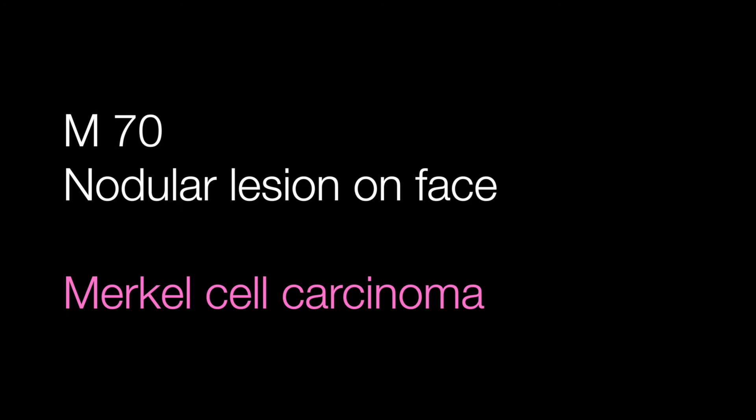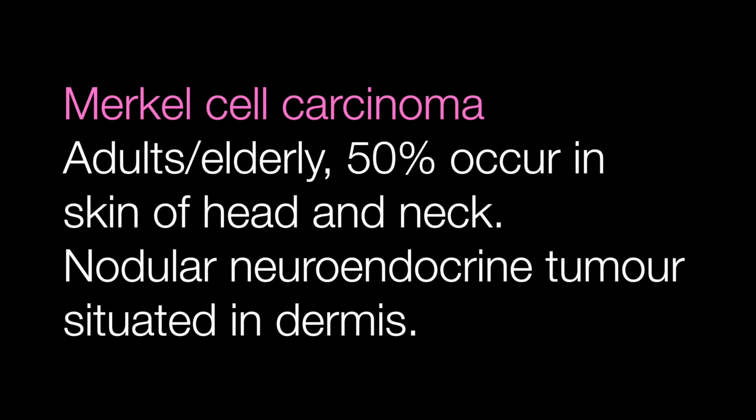The nodular lesion on the face of the 70-year-old man is a Merkel cell carcinoma. The majority of Merkel cell carcinomas arise in adults, especially the elderly, and 50% of them occur in the skin of the head and neck and face. The tumours are nodular and the tumour cells are situated in the dermis and sometimes extend into the subcutaneous tissues.